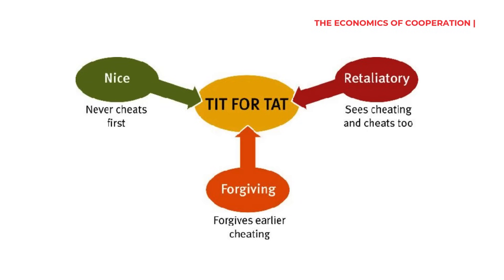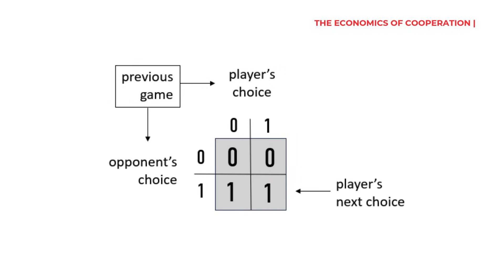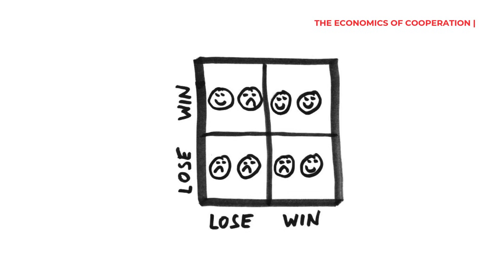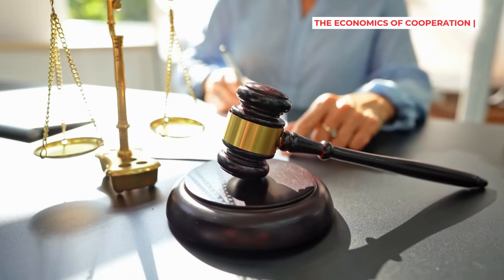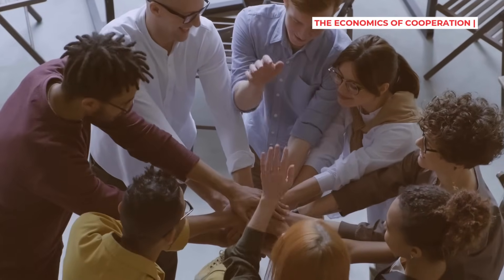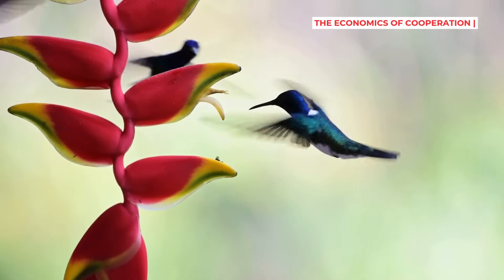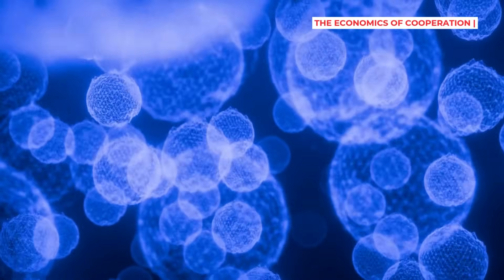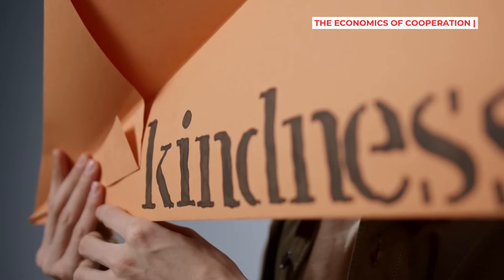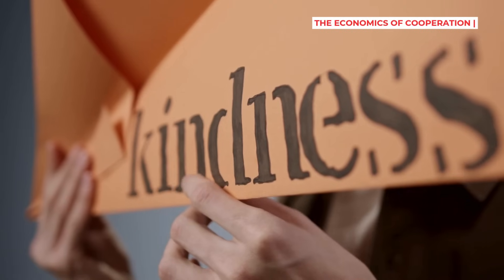A surprisingly simple strategy called tit-for-tat often wins in repeated games: start by cooperating, then just do whatever the other person did last time. It's forgiving enough to allow recovery from mistakes, but tough enough to discourage cheating. Humans have also created brilliant institutions that transform lose-lose situations into win-wins. Laws, contracts, and property rights aren't just boring paperwork — they're game-changing inventions that make cooperation the winning move. Even in nature, cooperation has evolved repeatedly: tiny cells join together to make complex creatures, animals form partnerships. Kindness can be just as rational as selfishness under the right conditions.